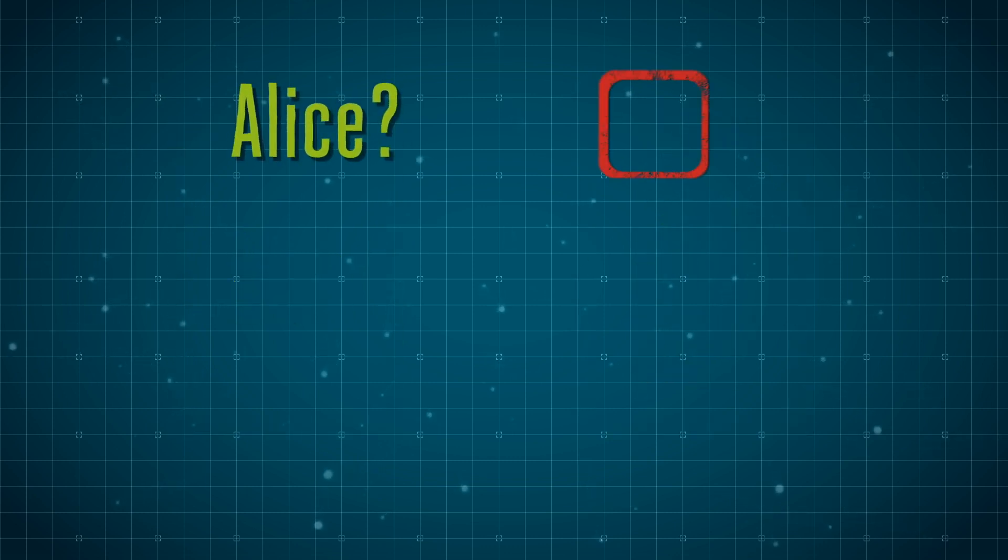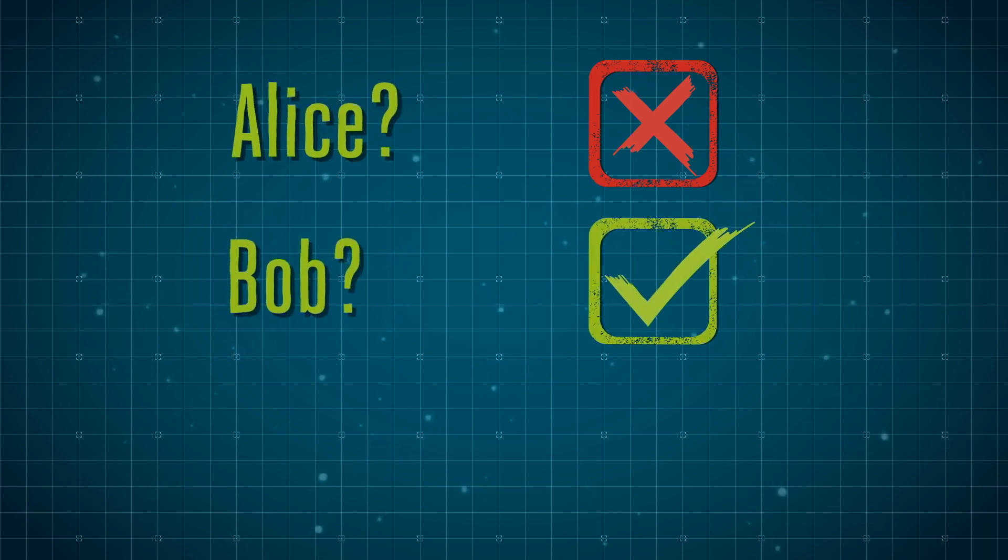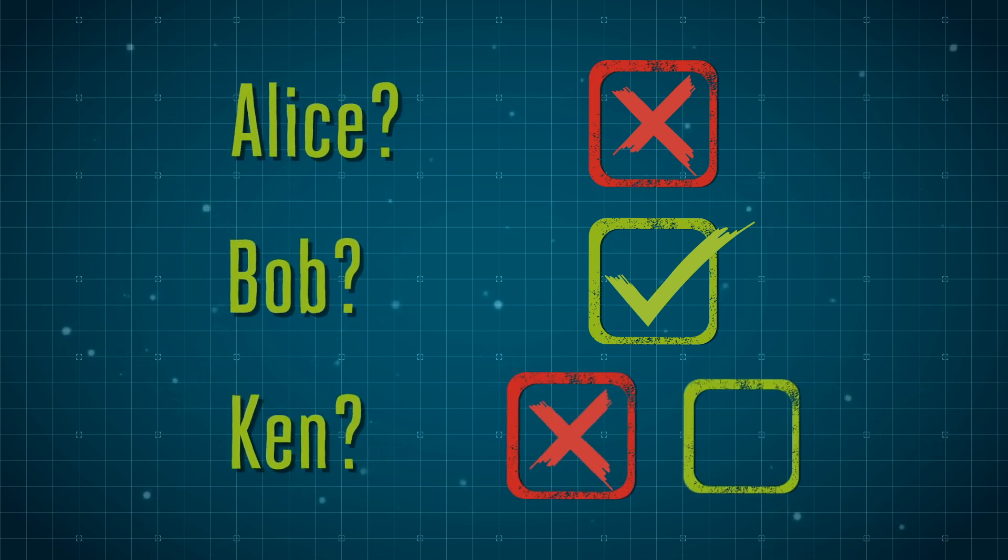One way we can check this is by using our logic. Go through each person and verify true or false as to whether they should be on the list. It turns out that both are correct when you ask this question for Ken.